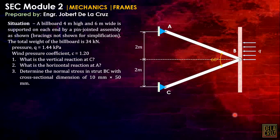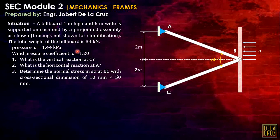Another situation on engineering mechanics. A billboard 4 meters high and 6 meters wide is supported on each end by a pin-jointed assembly as shown. Bracings are not shown for simplification. The total weight of the billboard is 34 kilonewtons.